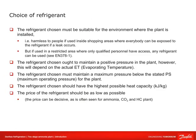The refrigerant chosen must be suitable for the environment where the plant is installed — harmless to people if used in shopping areas where everyone can be exposed in the event of a leak. If used in a restricted area where only qualified personnel have access, any refrigerant can be used per CEN 378-1. The refrigerant must maintain positive pressure in the plant, a maximum pressure below the stated PS maximum operating pressure, the highest possible heat capacity, and should be as low cost as possible — as is often decisive for ammonia, CO2, and HC plants.